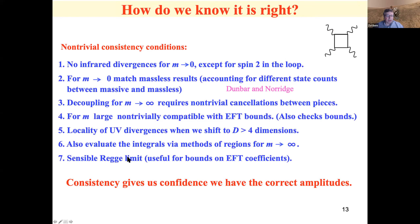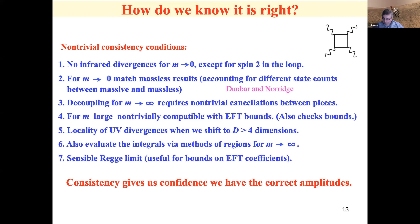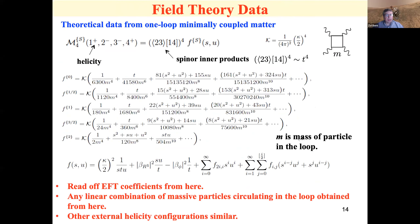Getting the data is very simple once you have the amplitude. You just series expand in one over M, do this for all the different particles, and collect the coefficients — coefficients in amplitudes. Not only do we look at individual particles circulating in the loop, but of course any linear combination — make up your own theory of what you want circulating in the loop — is also valid data.